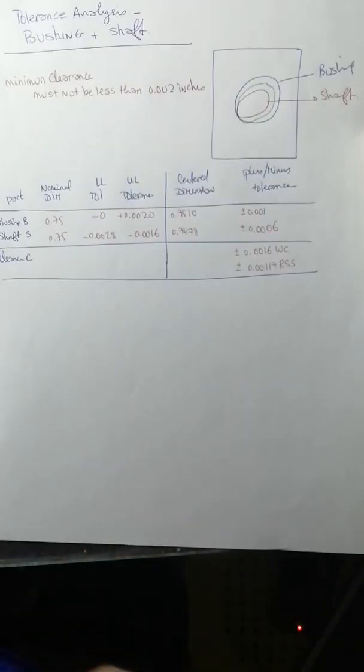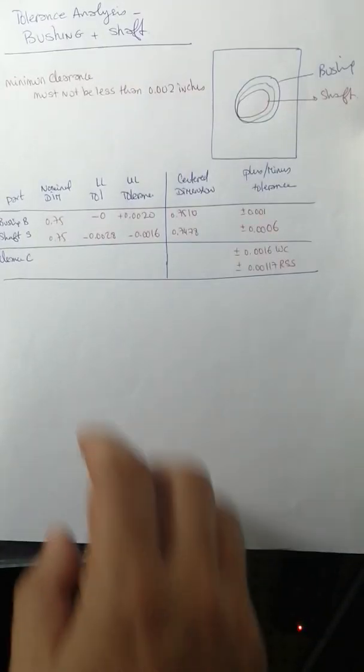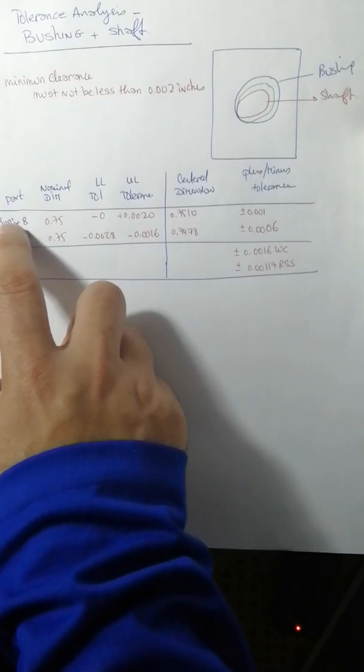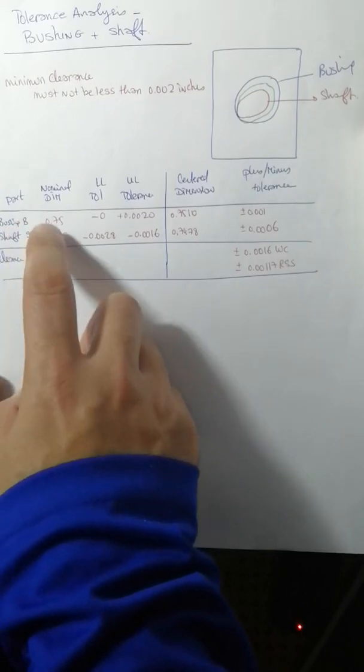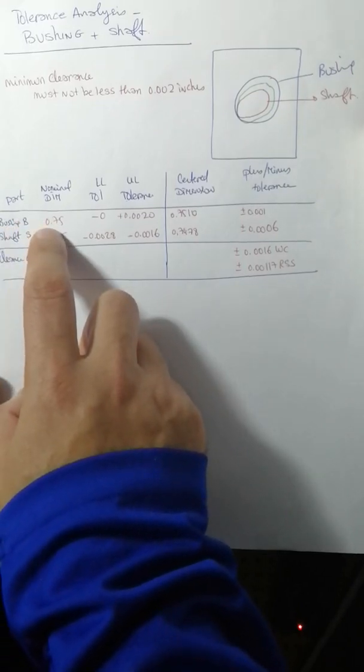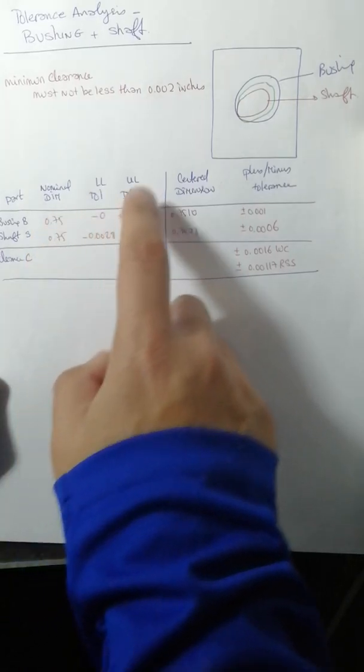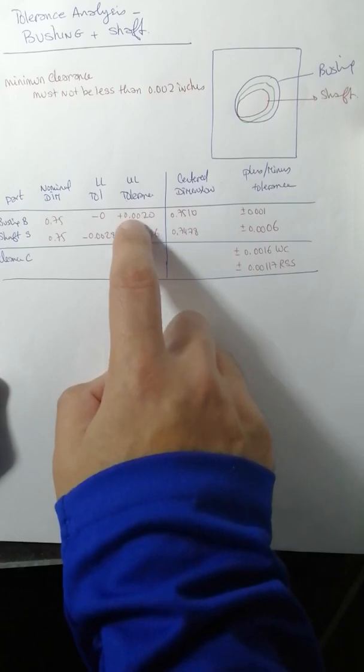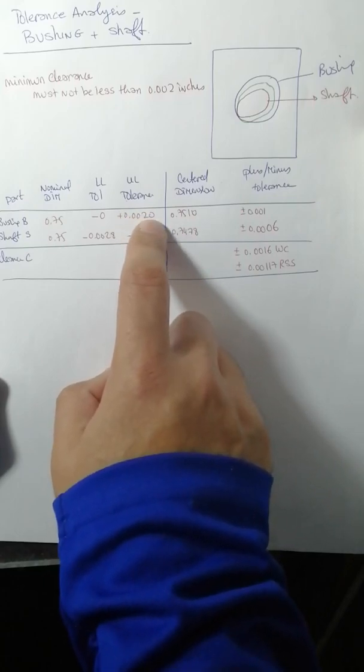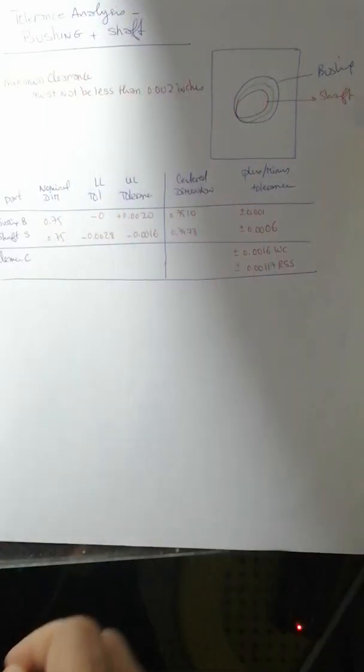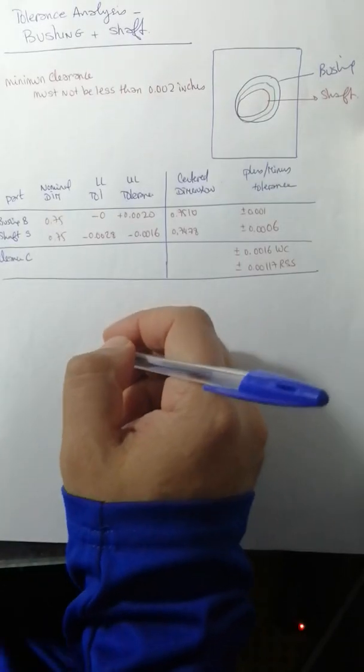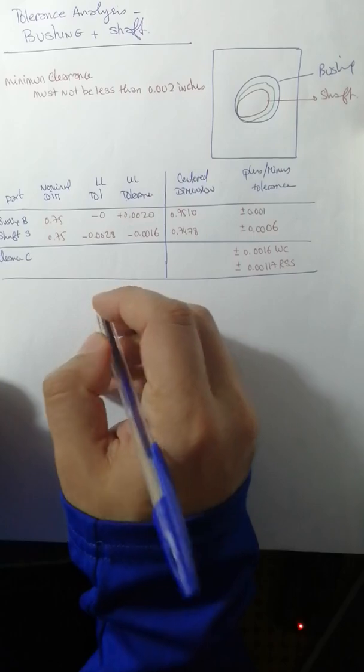Another point we need to make sure of: we bought the bushing and the guy in the shop told us that the nominal dimension is 0.75, the lower level tolerance is minus zero, the upper level tolerance is 0.0020. So first things we need to do - we know that those are the dimensions written on the box, but they are not accurate.